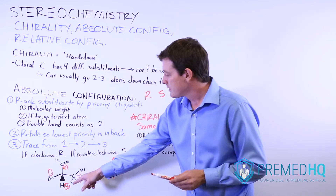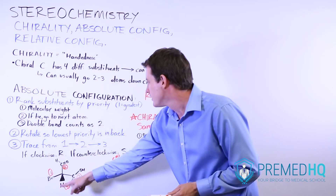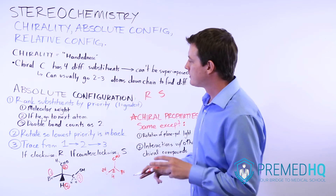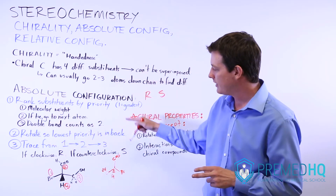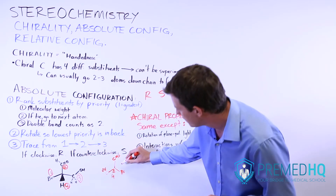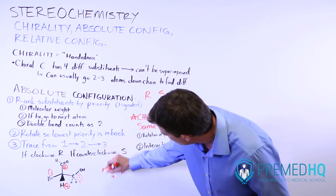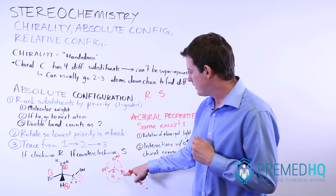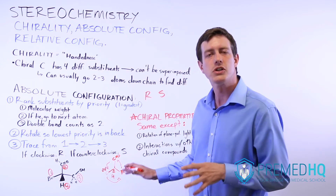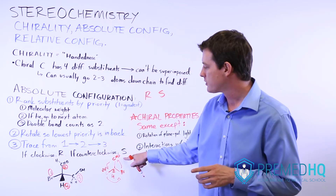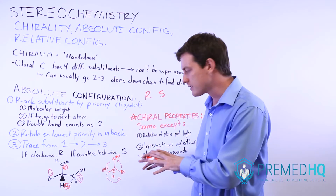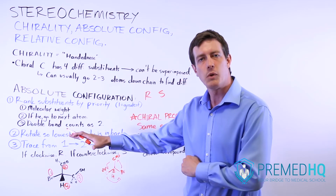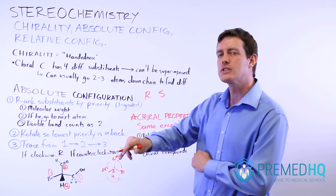Another approach: if the lowest priority substituent is facing toward you instead, you can trace it as it is and just use the opposite rules. So essentially, you rotate it so the lowest priority is in the back, then trace from priority one to priority two to priority three. Going from bromine to the C=O group to the COH group — one, two, three — notice that those are rotating in a counterclockwise direction. If it is counterclockwise, this is described as an S carbon. Its absolute configuration is S, meaning when you go from first to second to third priority with the lowest substituent facing away from you and the rotation is counterclockwise, you call it S. If it's clockwise, you call it R.